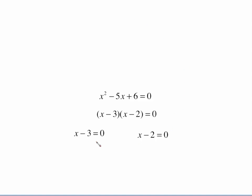So we have very simply x minus 3 equals 0, x minus 2 equals 0. Two very simple one-step equations to solve. On this one, add 3 to both sides. On this one, add 2 to both sides. And we have x equals 3 and x equals 2.